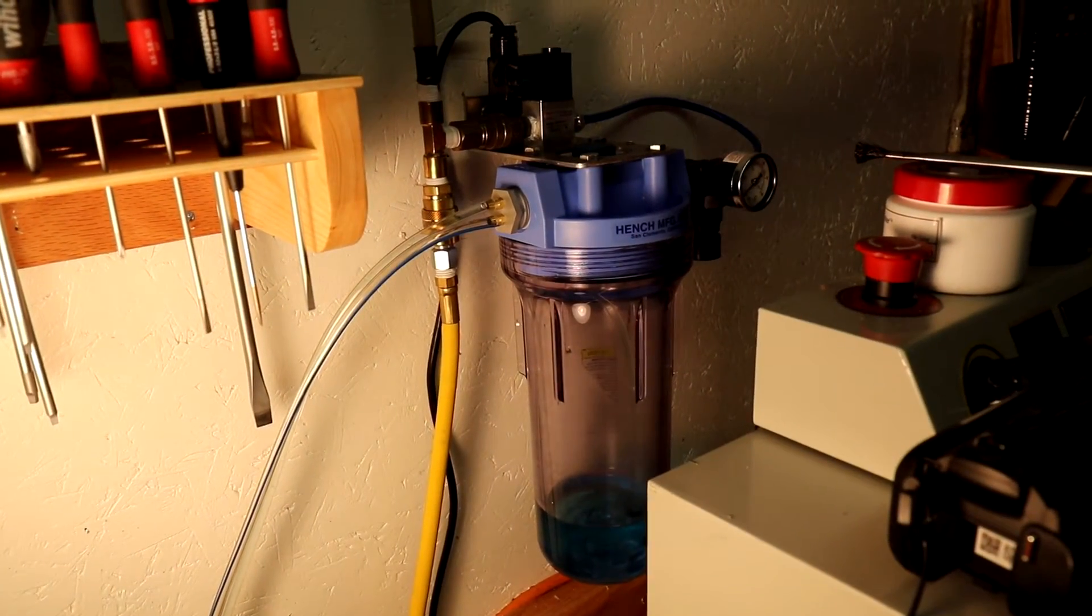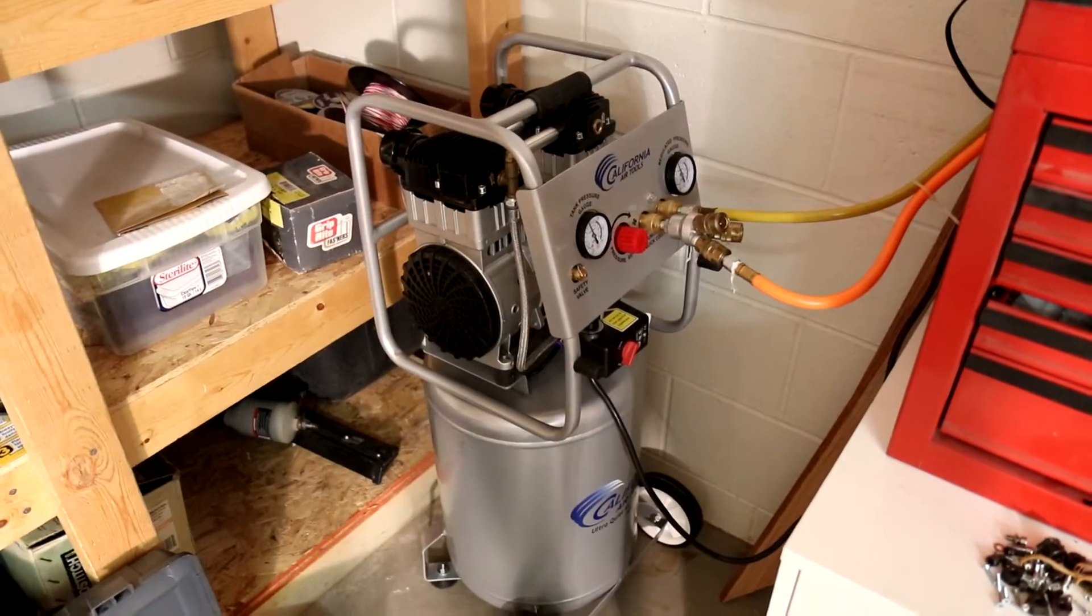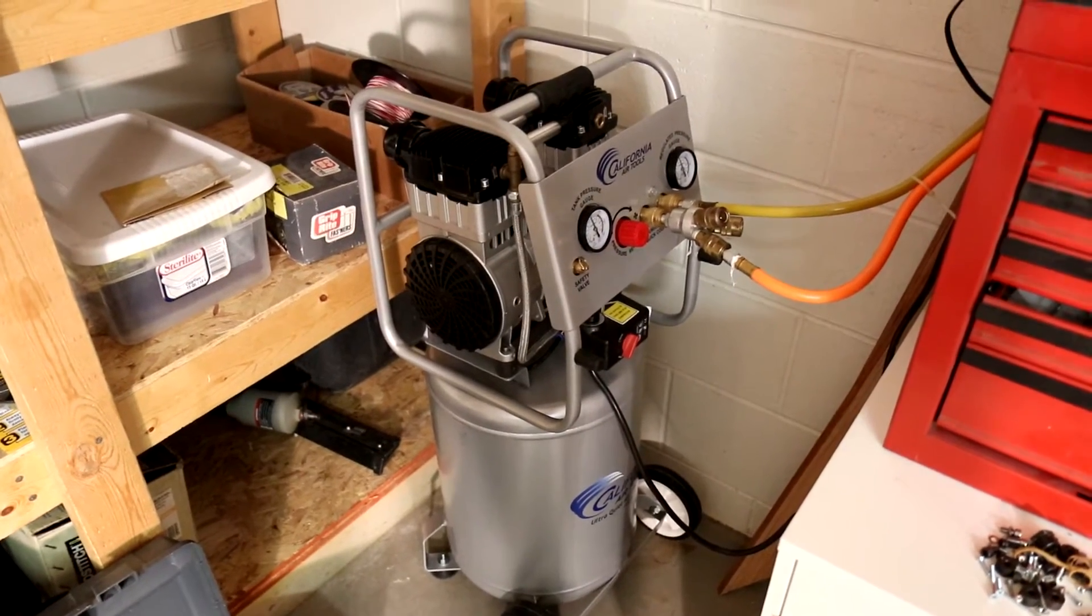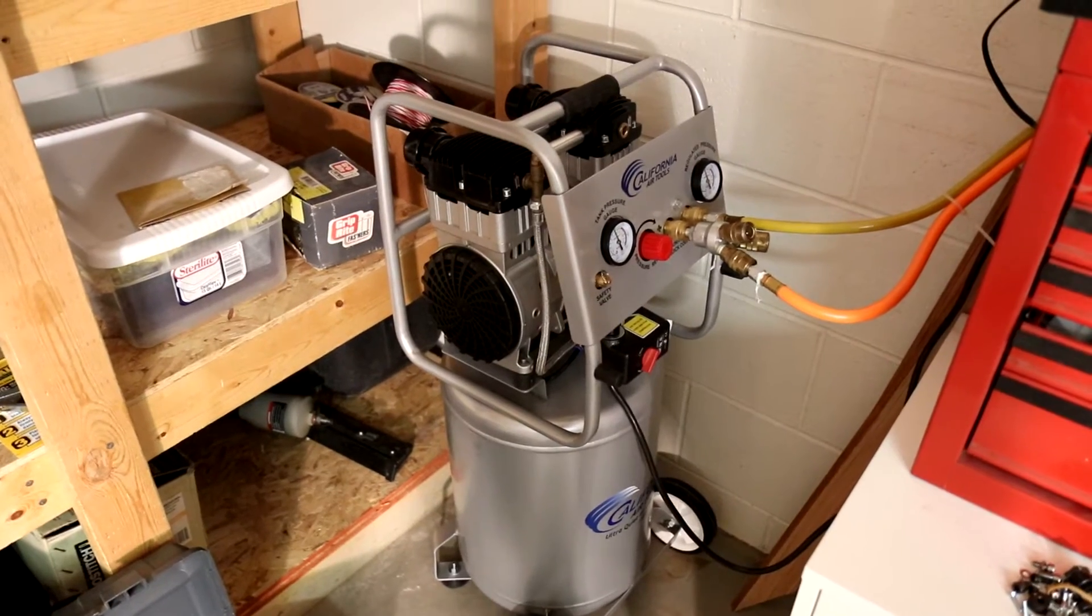The air line continues from the fog buster to an air gun that I used to blow chips off. The air compressor that I'm using is from California Air Tools. It's the 10 gallon model and is actually quieter than the switch mode power supply for the stepper motors on the mill.